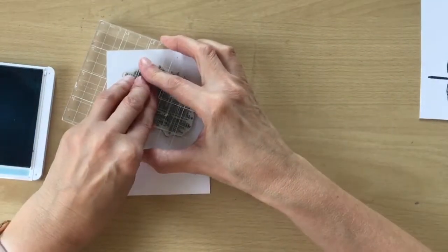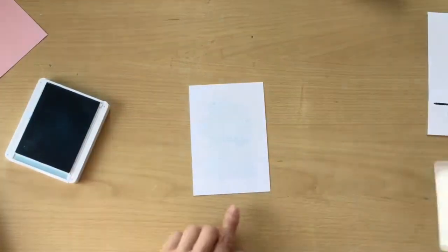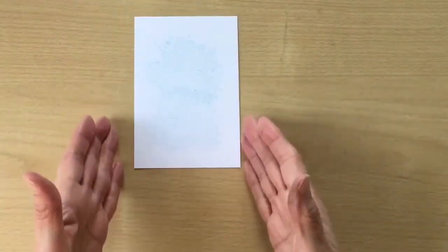So I'm stamping off and then onto my Basic White. I'm going to do that again and just stamping again. That gives us a nice subtle background.